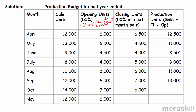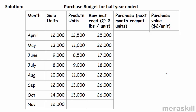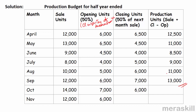Using the formula — sales plus closing minus opening — production for April is 12,500. For May it's 11,000, June is 8,500, July is 9,000, August is 11,000, and September is 13,000. This gives us the six-month production budget.